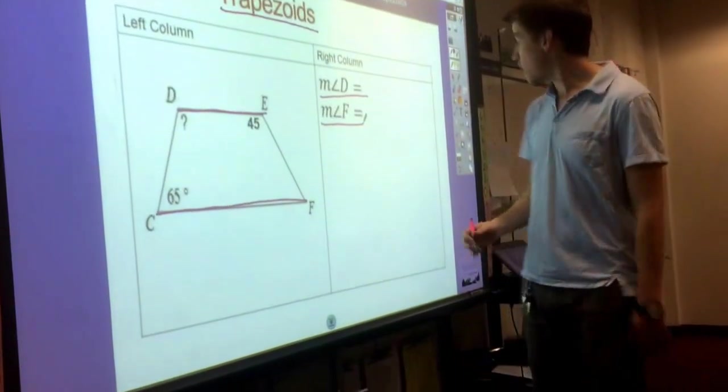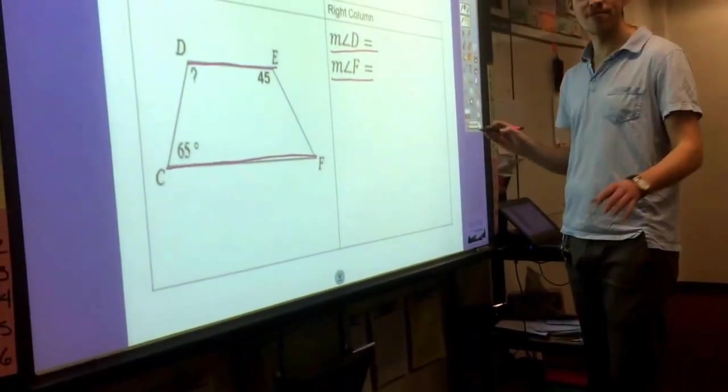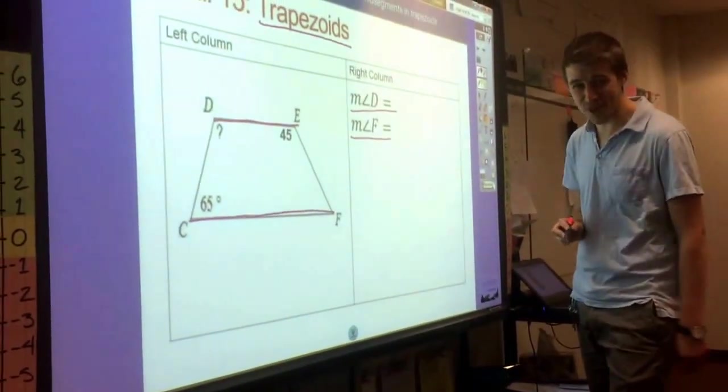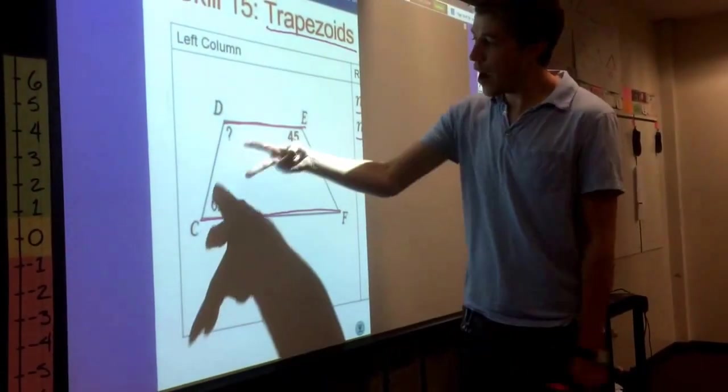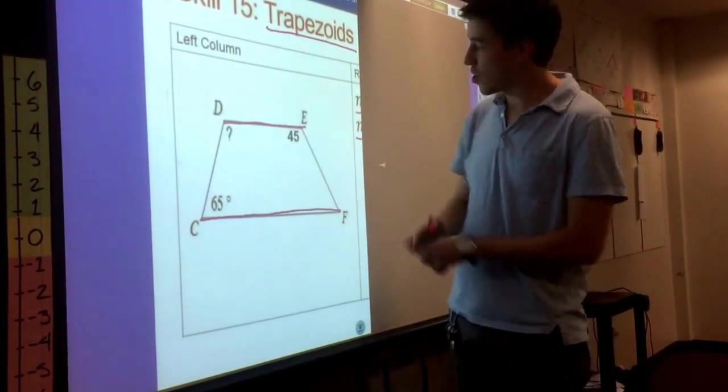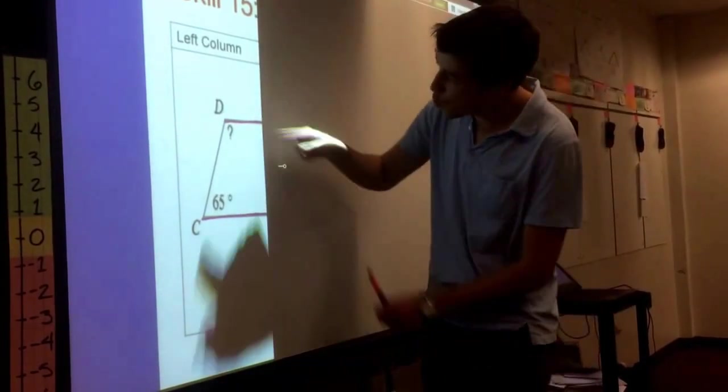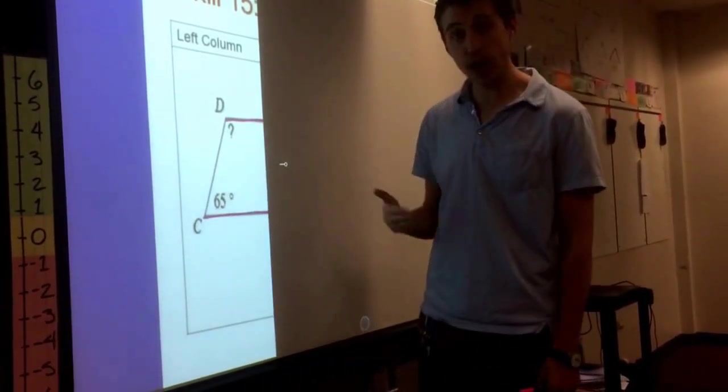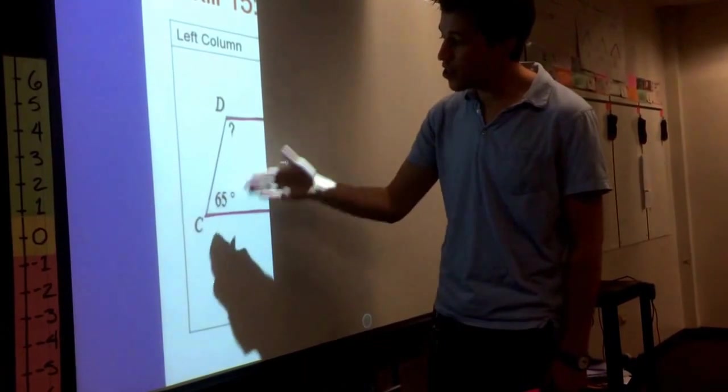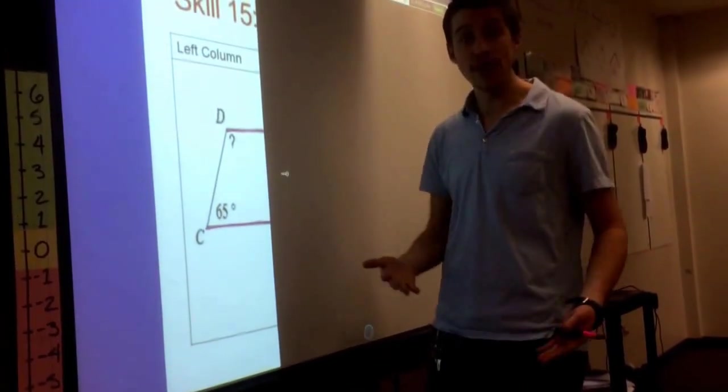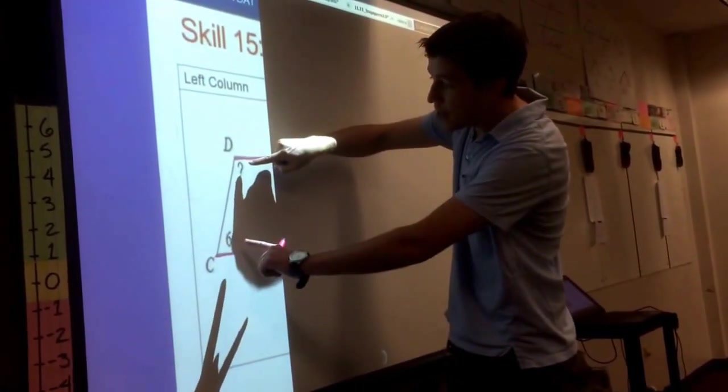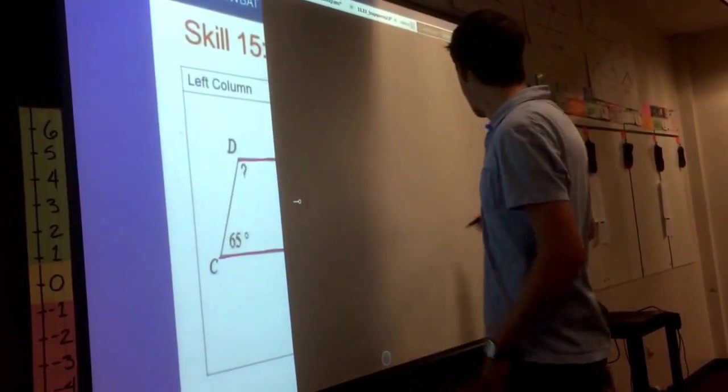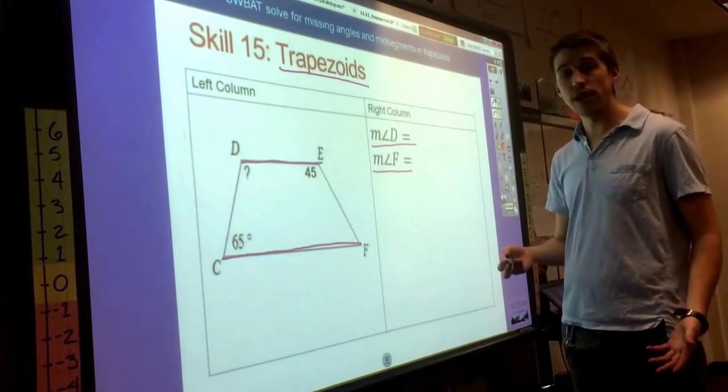What we know with a trapezoid is that two angles that are adjacent to each other, that are in between the two parallel lines, which we're going to call bases, we know that these two angles will be supplementary. They add up to 180. So if they're on the same side and on different bases, those two angles are going to be supplementary and they'll add to 180.